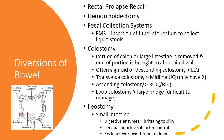Bowel diversions include repair of rectal prolapse, hemorrhoidectomy, and fecal management systems (FMS). An FMS involves inserting a tube into the rectum and inflating a small balloon to keep it in place so it can collect liquid stool. Once the client's stool is no longer liquid, the FMS is no longer indicated.